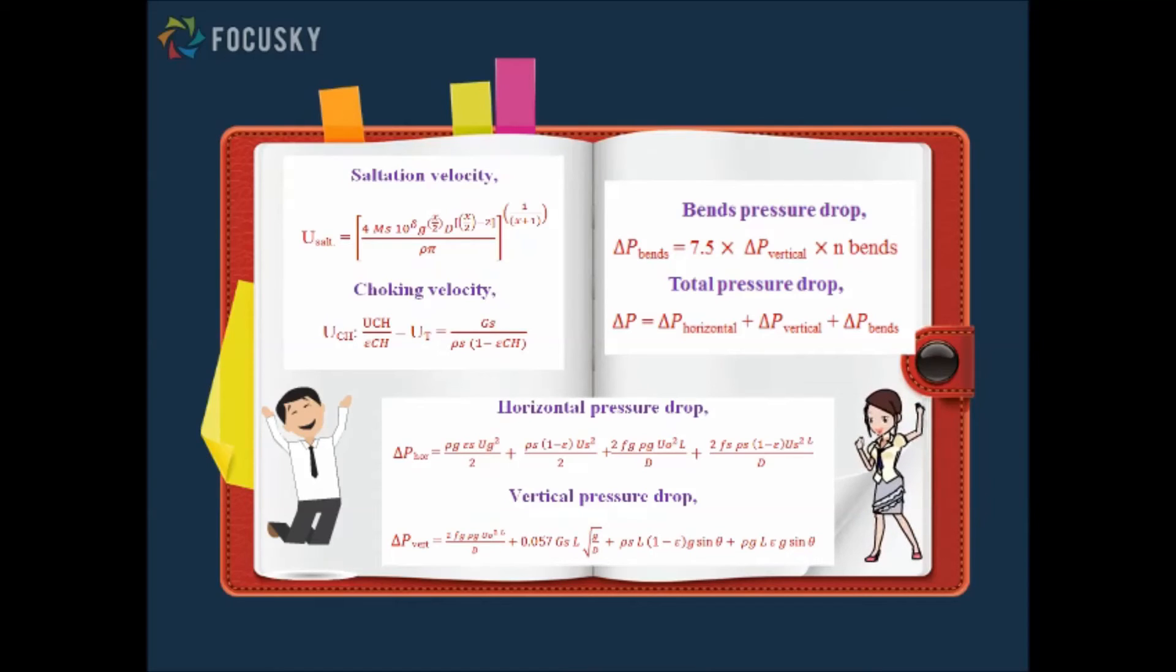Next, the pressure for bends is determined from the value obtained for pressure drop at the vertical line. Lastly, the summation of all three of pressure drop will give you the total pressure drop across the pneumatic system.